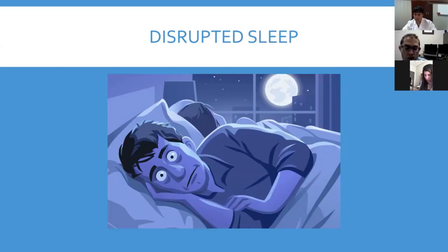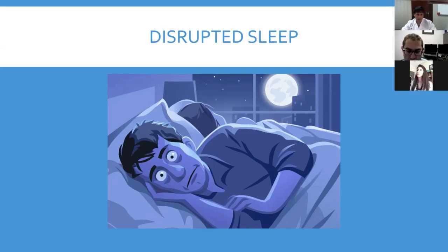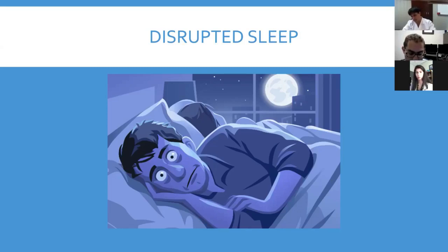Disrupted sleep should really go on the same slide as stress and anxiety because they often go hand in hand. It's very important to talk to your physician and find resources for it, because if this is a problem you're facing, it does all of the things stress and anxiety can do — causing dysfunction in your autonomic nervous system and adrenal cortisol production. Many studies are now linking disrupted sleep with increased risk of cardiovascular disease.